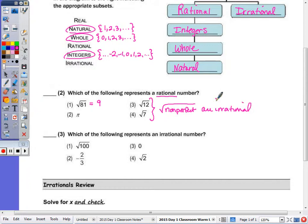Those that you can't take the square root of and get a whole number or an integer are rational. So that would be answer choice number one. Number two, which of the following represents an irrational?